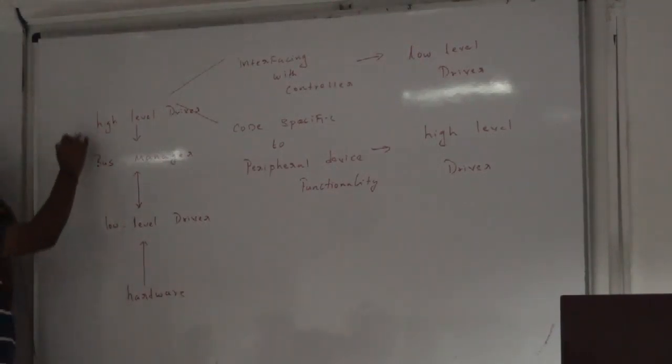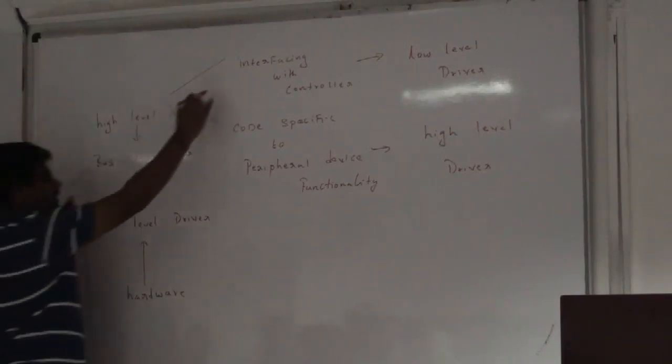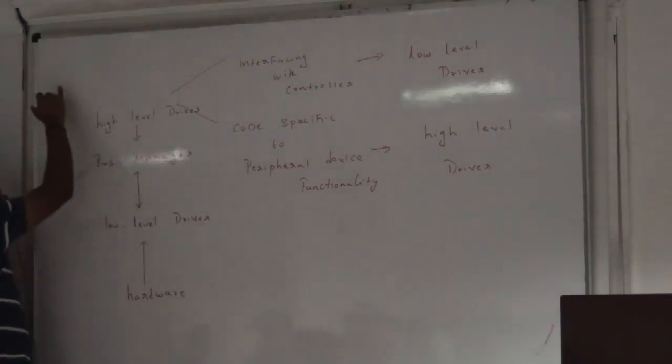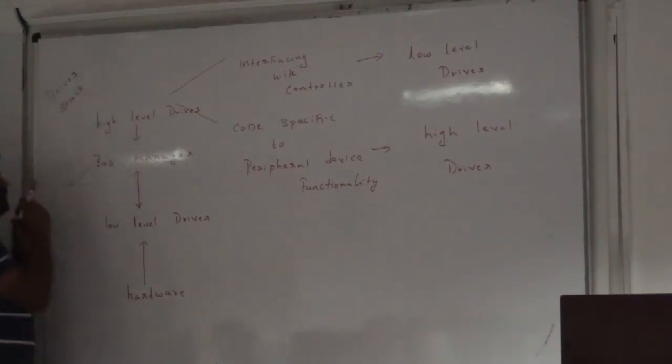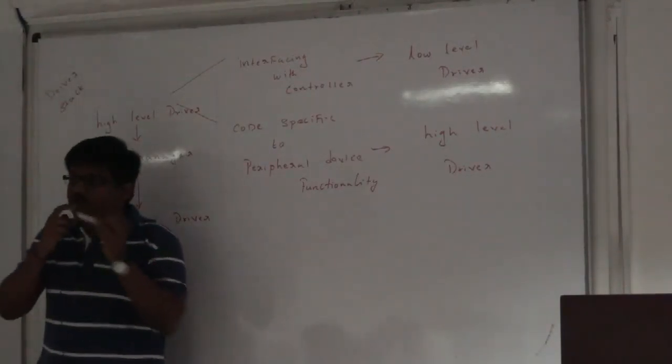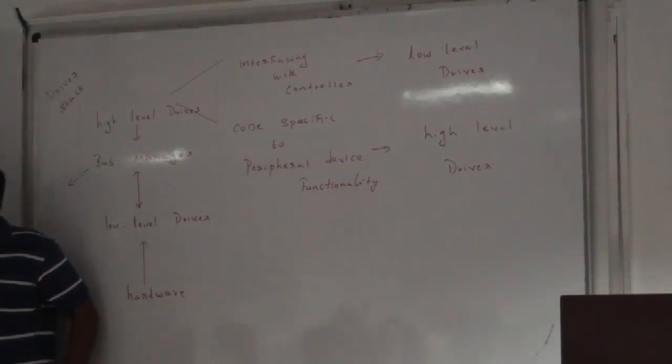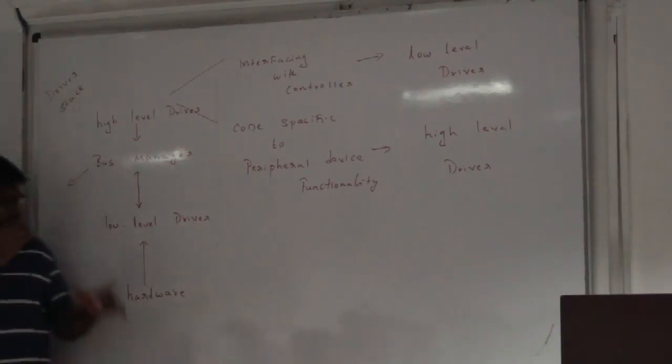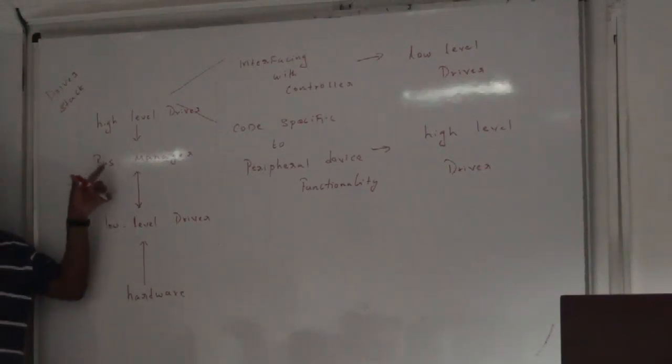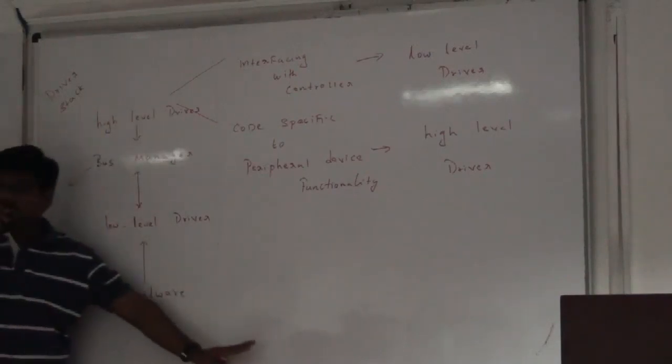So this is generally called in operating systems as a driver stack. Like this we have a PCI driver stack, USB driver stack, I2C driver stack. Different buses as we have, different controller buses, different peripheral buses, we have different driver stacks. PCI means you have a PCI controller driver, PCI manager, an abstraction layer, and all the devices which are hooked up on the PCI devices.